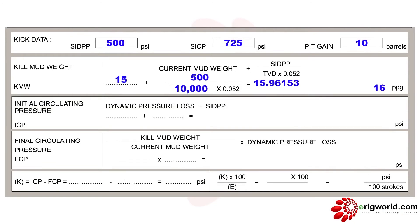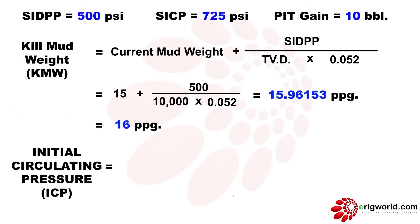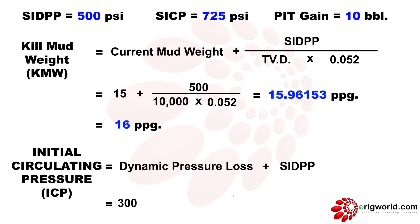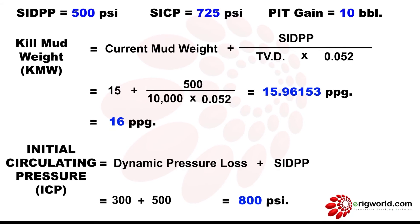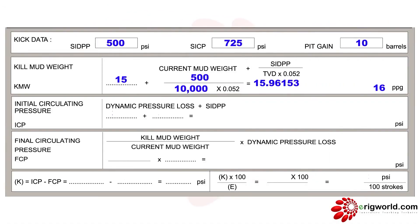Now let me calculate ICP. The formula is: dynamic pressure loss plus SIDPP. Dynamic pressure loss is 300 psi as given, plus SIDPP of 500 psi gives ICP of 800 psi. In the blank kill sheet, write down 800 psi.